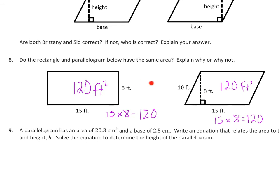For number 8, both figures give the same answer because they're both 15 times 8. The parallelogram has a height of 8 and base of 15; the rectangle uses length times width — also 15 times 8. A rectangle makes this easy because the side is already 90 degrees from the base. The parallelogram adds a diagonal of 10 feet, but that's irrelevant. If you were to shift the parallelogram as shown earlier, that 10-foot diagonal is longer than the height of 8. The formula base times height gives 120 feet squared for both.